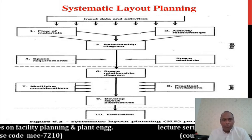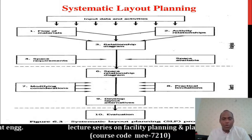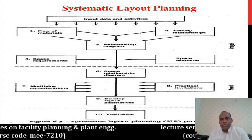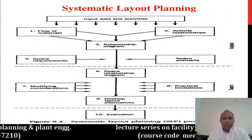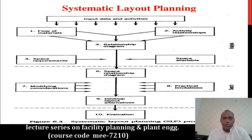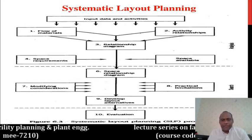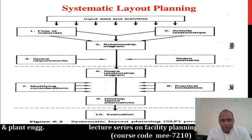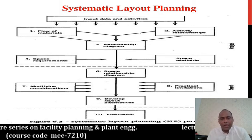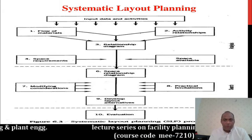Once you start the relationship diagram, you need to know how much space is available and how much space is required. In the analysis, these two values should be equal — for example, if the space requirement is 20,000 square feet, then your available space should also be 20,000 square feet.